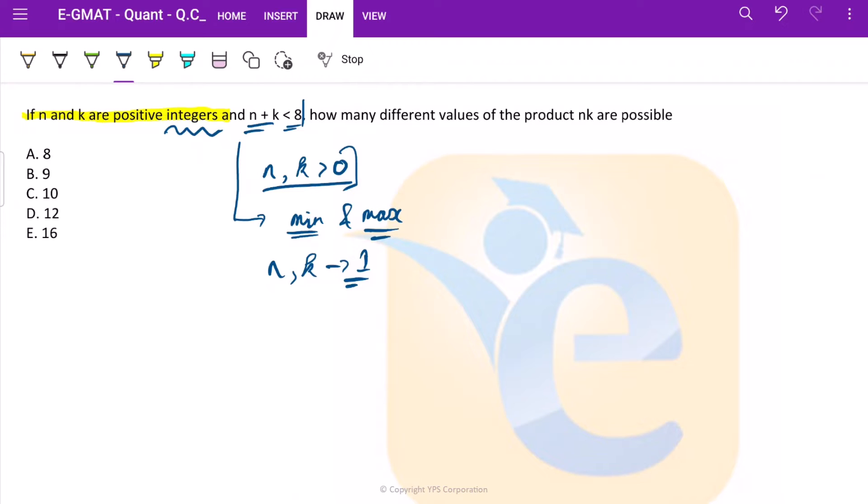Now moving forward, what can be the maximum value? So n plus k, they should be less than 8, which basically means n plus k maximum can equal 7. If one of them has to be 1, then the other has to be 6. So both of our n and k can take values from 1 to 6. That is the inference we should actively take out from this much part of the information.